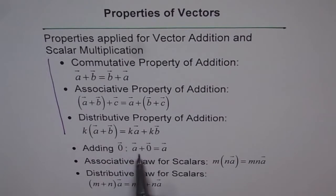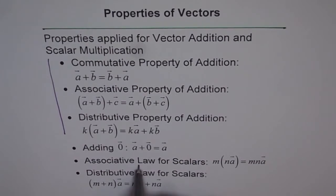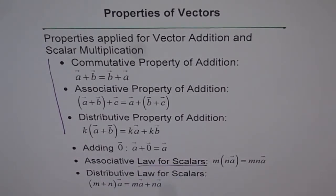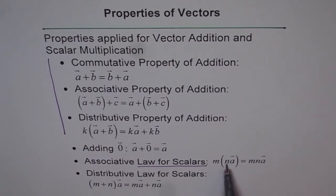Then we have associative law for scalars. Associative law for, note the name, law for scalars. What is happening here is scalar multiplication. Do you see that? What we have here is scalar multiplication. That is what it is, associative law of scalars, and that is how it is.